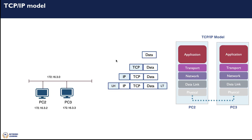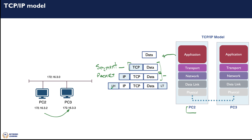Let's start with a simple network where PC2 wants to send packets to PC3. On PC2, the application creates the data. The data is then pushed down to the transport layer where a TCP header is added — here we have what we call a segment. This new data is pushed down to the network layer where an IP header is added, giving us the packet. The packet is pushed further down to the data link where it is encapsulated between a link header and a link trailer, forming the frame.